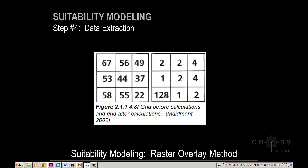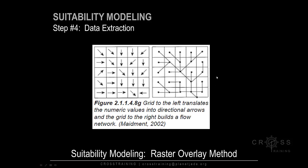We also see 128 over here, indicating that water — as in from 58 to 44 — would flow in the northeast direction, so we see 128. And we see a two meaning water flows southeast. Eventually when we calculate all the grids, we get something that looks like this: each cell contains a bunch of arrows, and we connect them together to create a pattern, or what we call a flow direction.